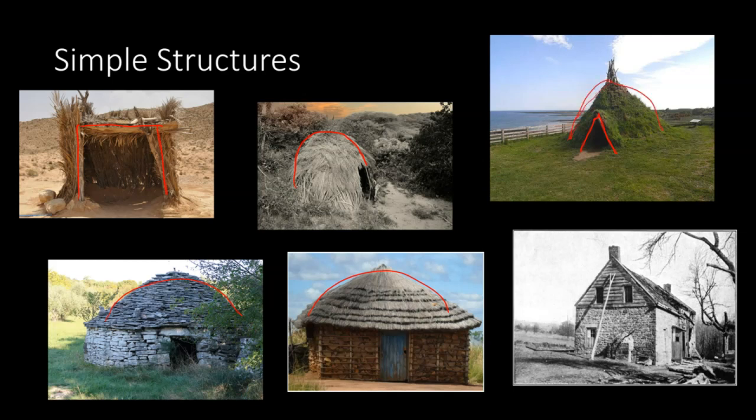Once you're getting into the more advanced houses, you can start to see the triangular arches appear, the chimneys appear, the mortar and concrete appear. But a lot of the forms were present even in the simplest structures, and we can see that if you go back and look through those — could be an interesting exercise.